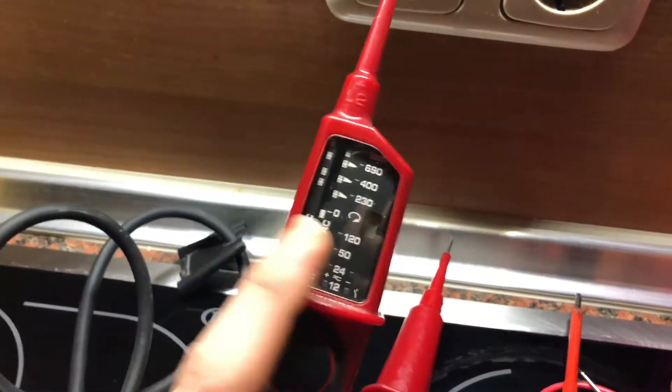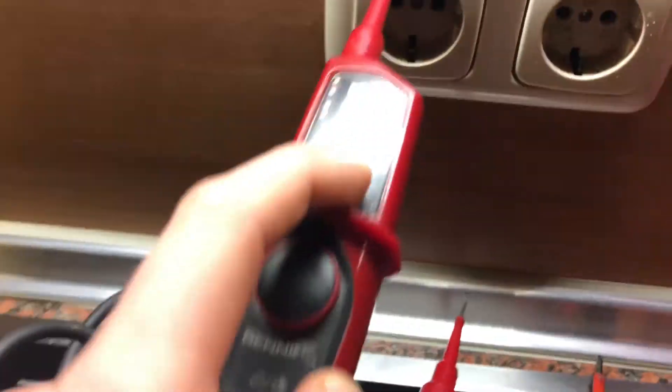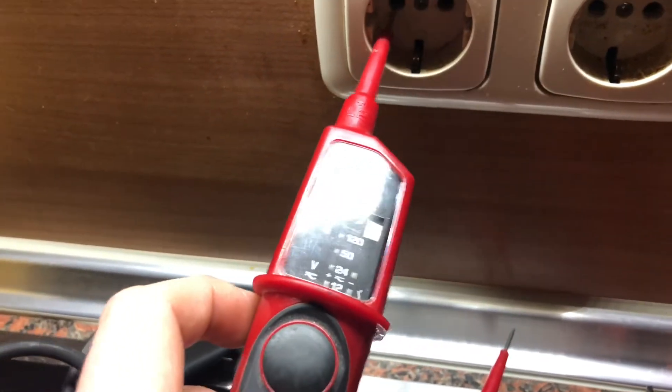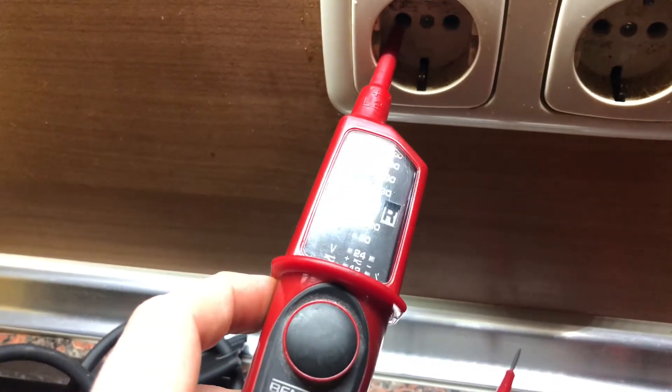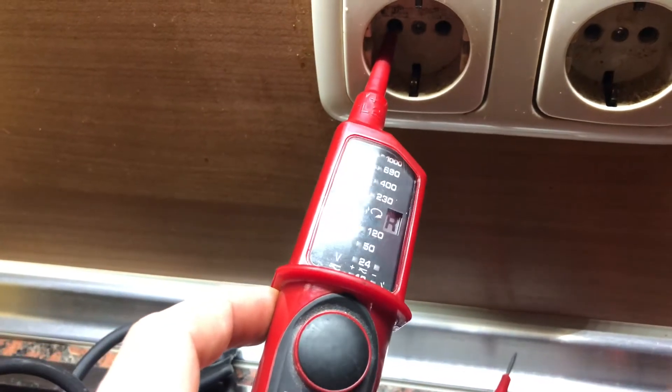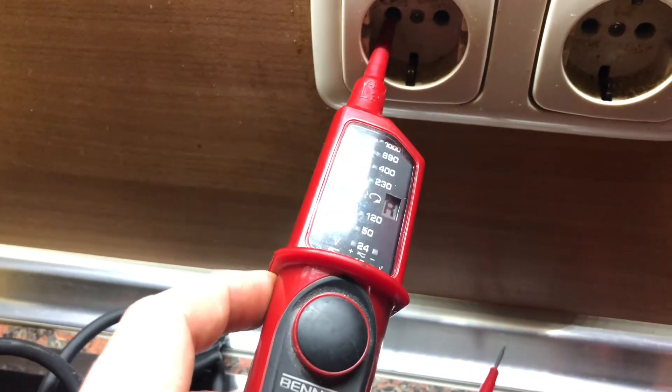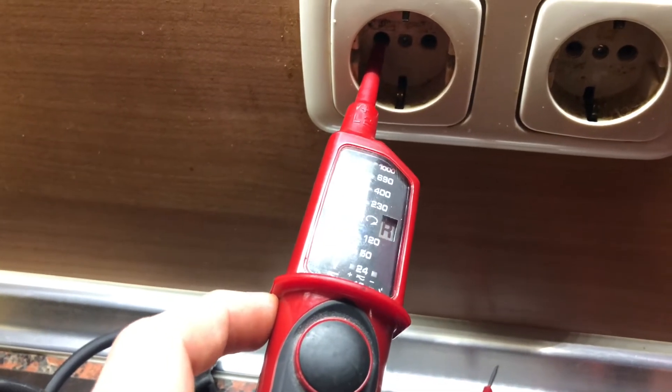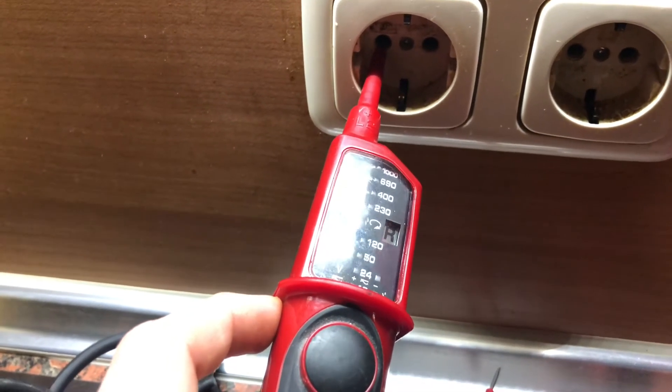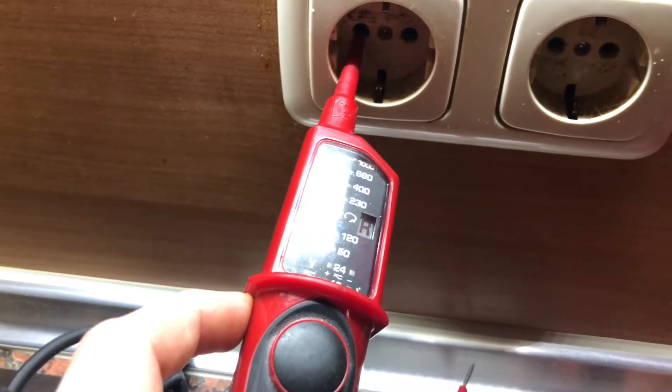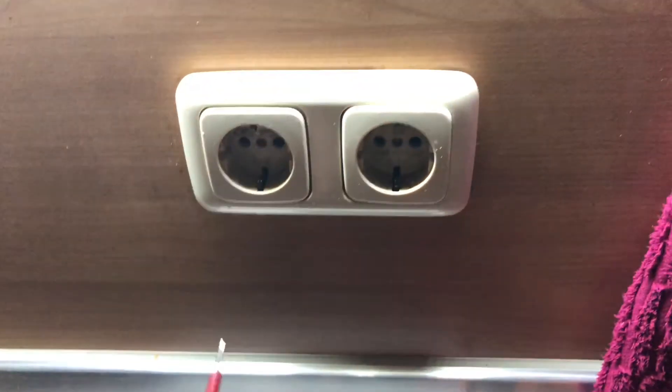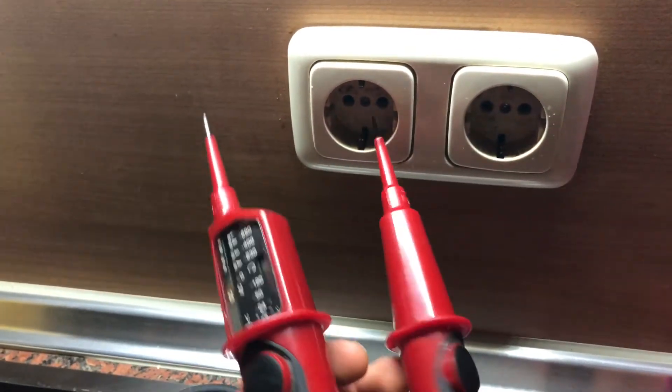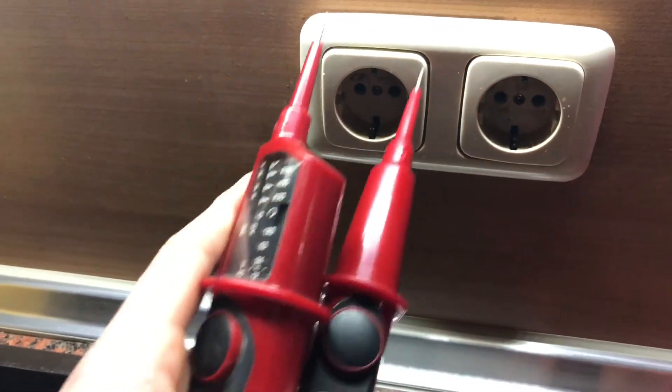And the winner of this comparison video is the Duspol. It's really easy to use. It has a medium size of function on board, like the AC and the DC voltage test. The functional test. A load connecting with light and vibration alerts, of course.